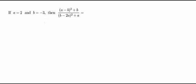Hey guys, so now we are dealing with question number 1, and the question says if a equals 2 and b equals negative 3, then a minus b squared plus b all over b minus 2a squared plus a equals what? So in this case,